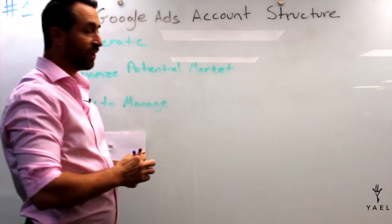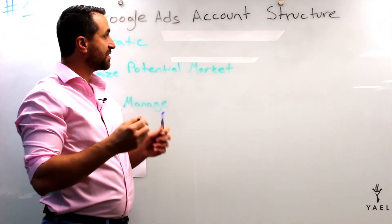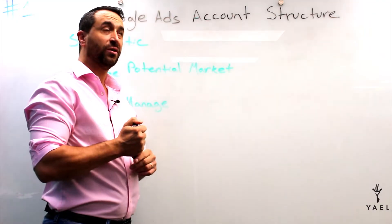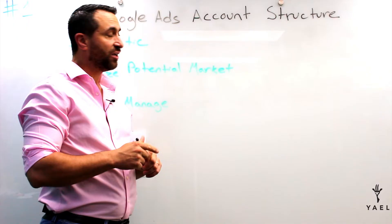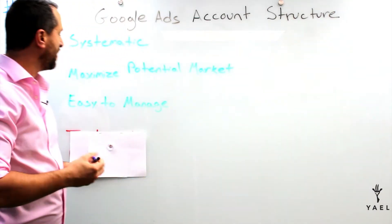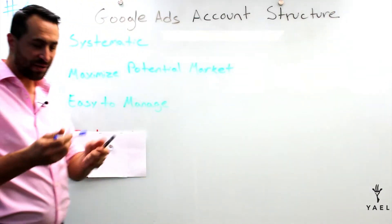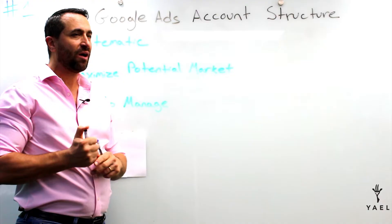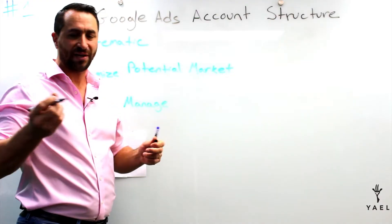There's a lot of ways to structure a Google Ads account. This is the same way I've been using for over 12 years, 13 years, and I think it will make sense to you too once you understand what it's about. So systematic, what does it mean? It means when you structure an account, you want to do it in a systematic way that makes sense.